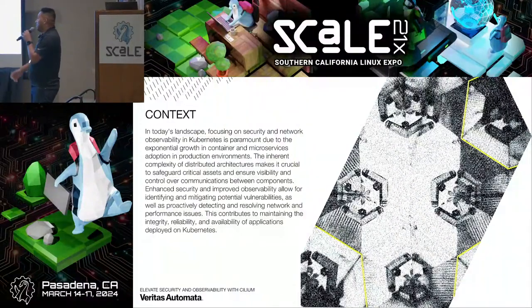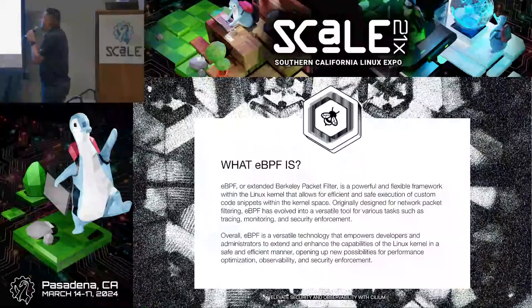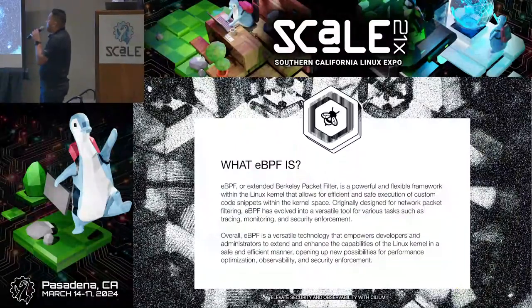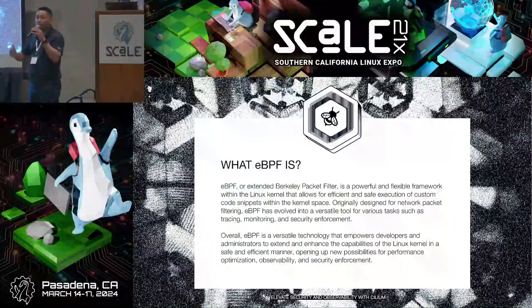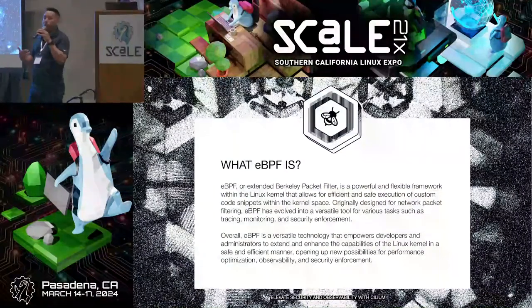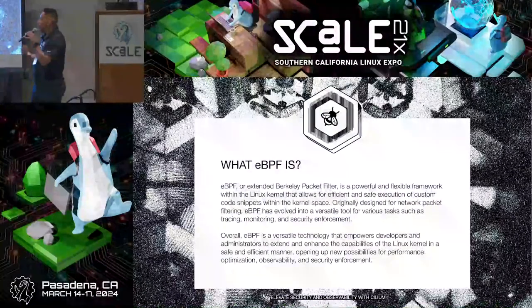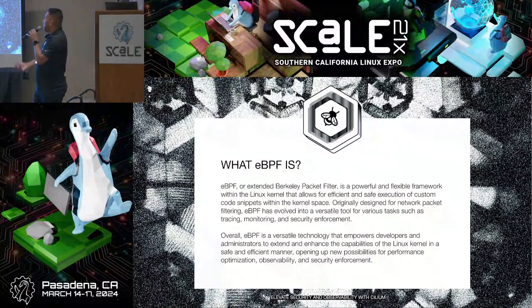Proactively, we can detect and resolve network and performance issues. This contributes to maintaining the integrity, reliability, visibility, and availability of applications deployed on Kubernetes. Working on distributed architecture is a big challenge — it's beautiful, you can have different things — but we have challenges to resolve in the backbone: the network.